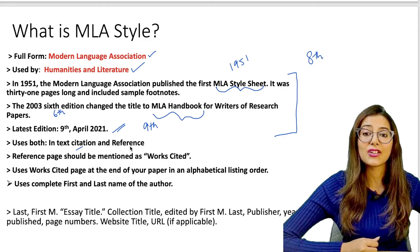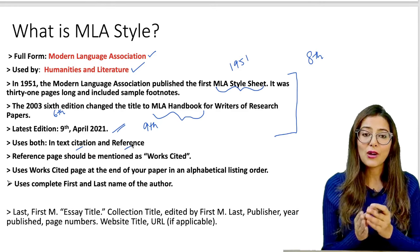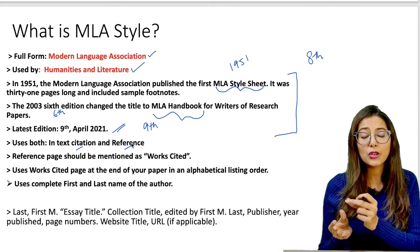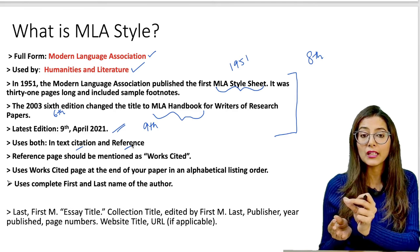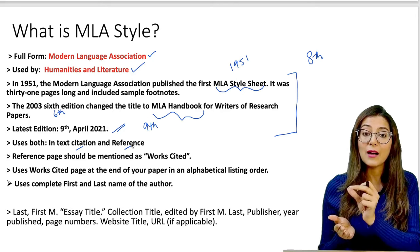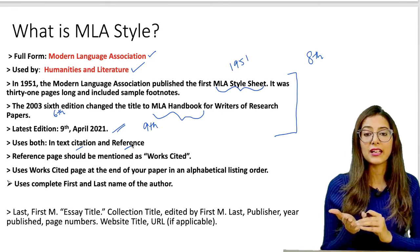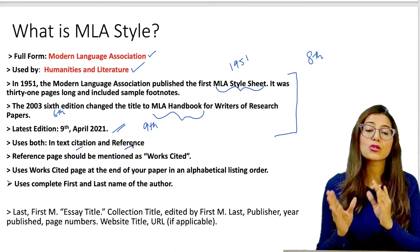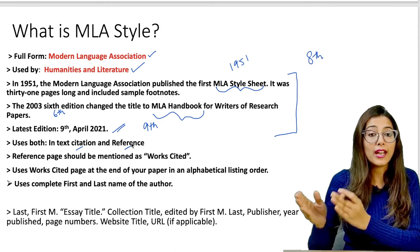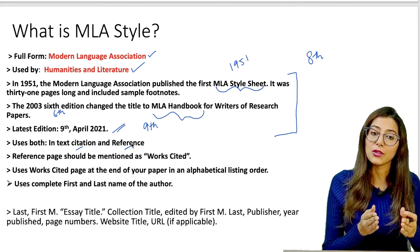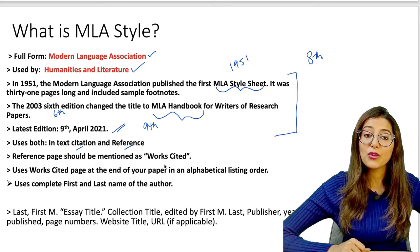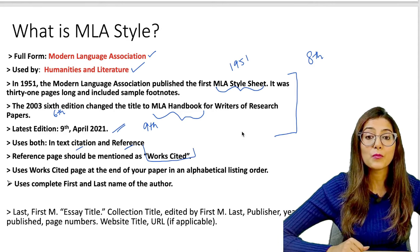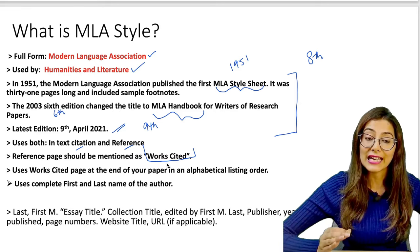MLA style uses both in-text citation and reference. In-text citation means a very short reference within the text where you give just the author's name and page number. The full reference comes at the end. In MLA style, the reference page is titled 'Works Cited.' The Works Cited page lists entries in alphabetical order. MLA uses the complete first and last name of the author.